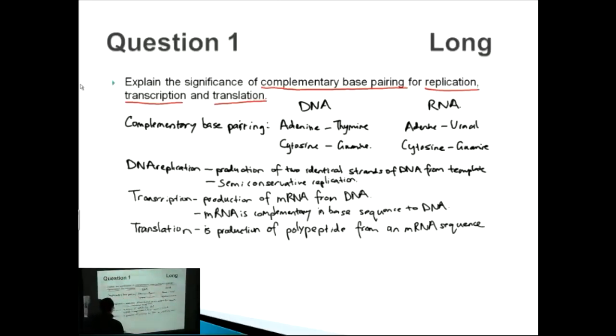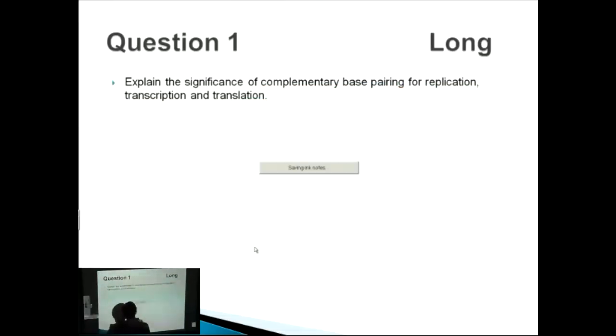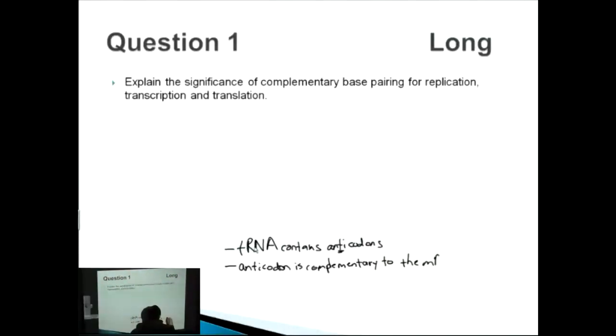Let's talk a bit about tRNA. The tRNA contains anticodons - anticodon has the letter T in it. The tRNA contains anticodons and the anticodon is complementary to the mRNA codons. We're talking about complementary base pairing.